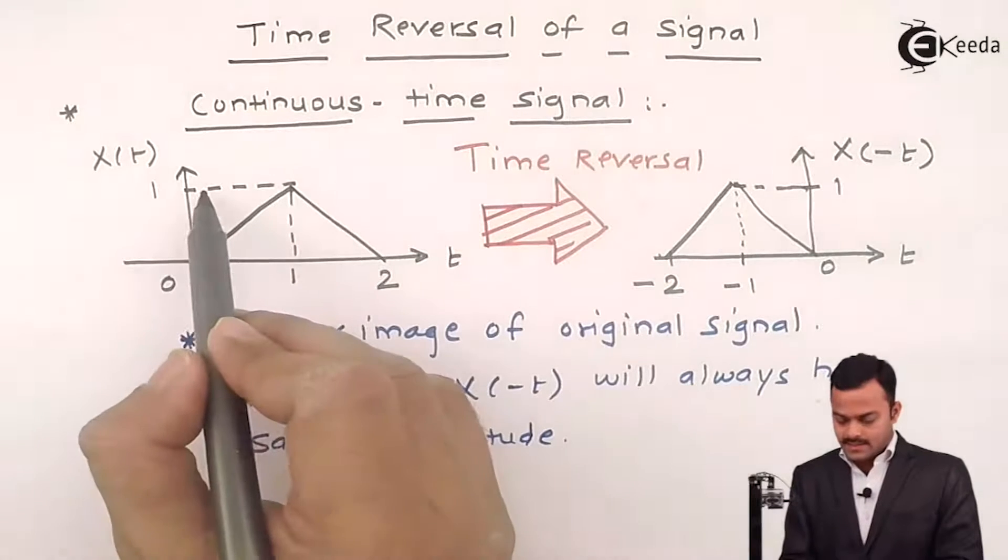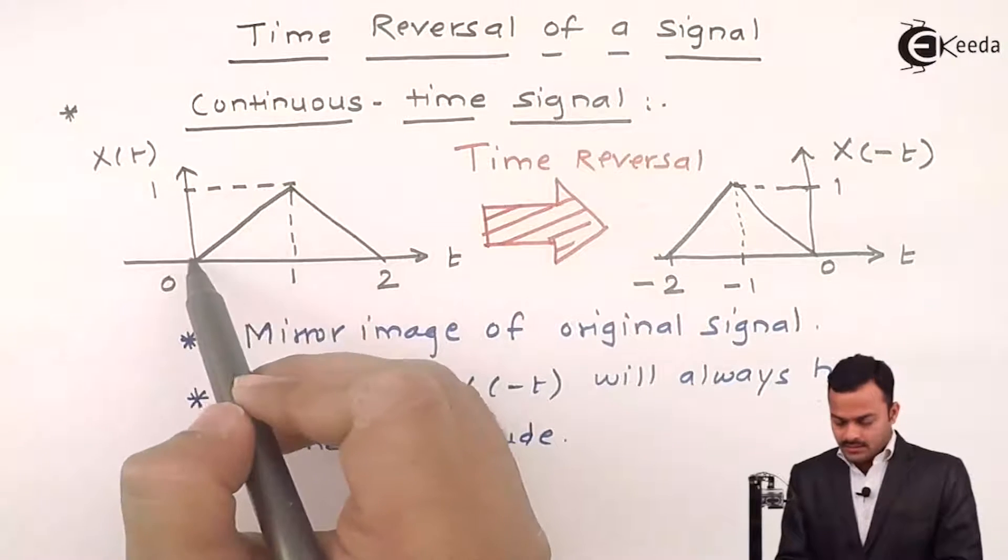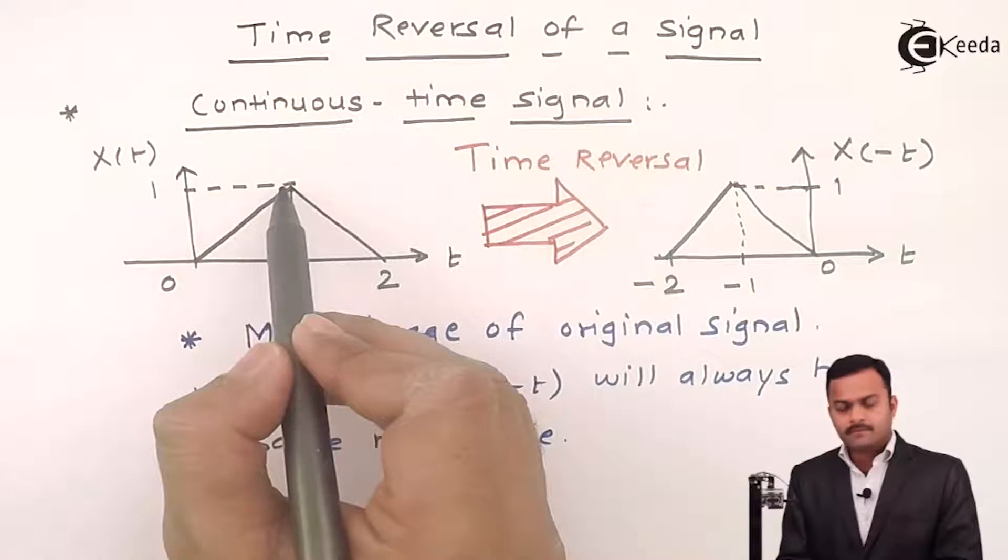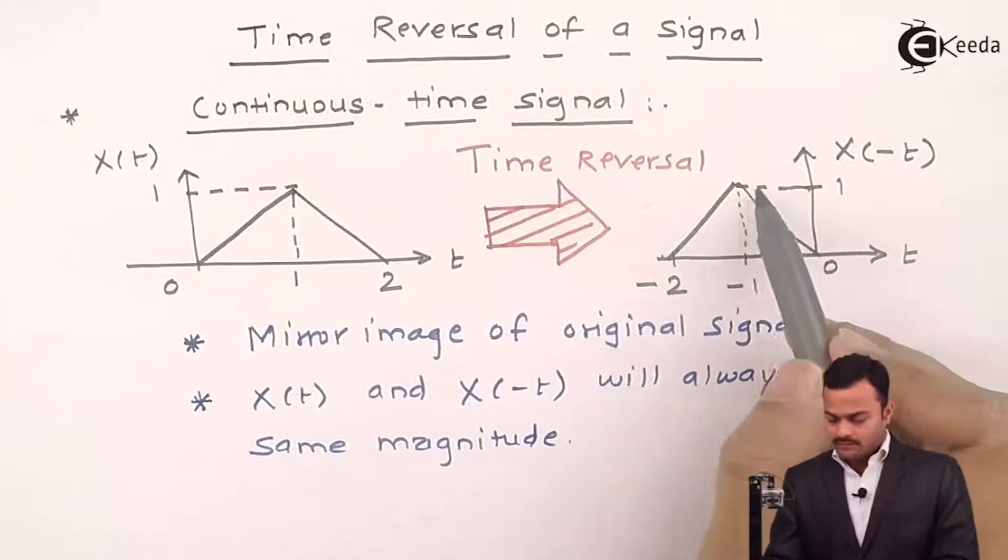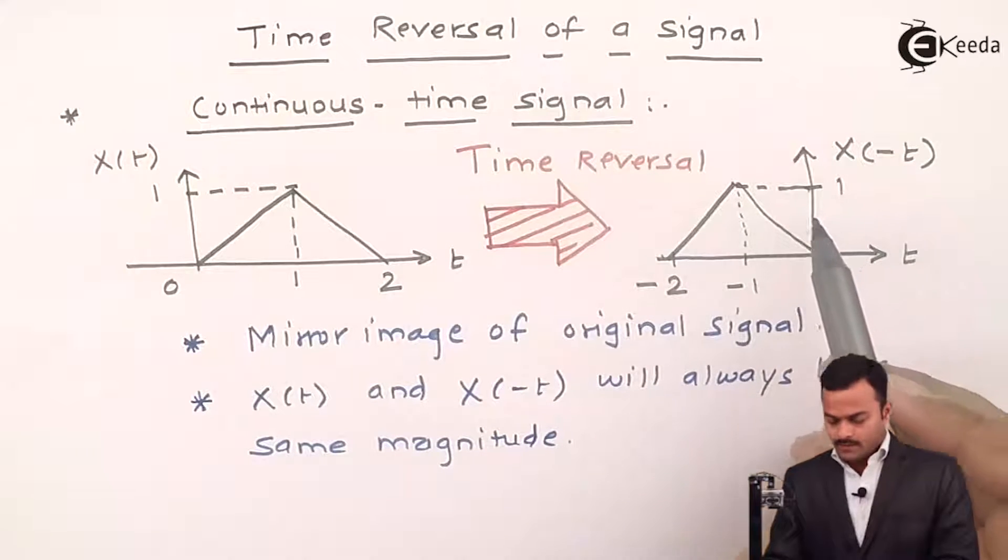Means, in this case of x of t, the signal will have the value 1. In case of x of minus t also, signal will have the value 1.